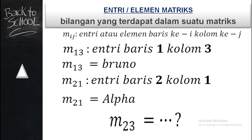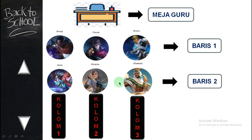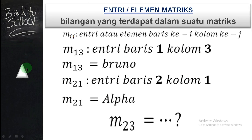Bagaimana kalau Anda ditanya M23? Jadi entry baris ke 2, kolom yang ke 3. Baris ke 2: Alfa, Silvana, Khalid. Kemudian kolom yang ke 3 kita lihat: kolom 1, 2, 3. Jika Anda menjawab Khalid, maka jawaban Anda benar. Jadi M23 adalah Khalid, atau angkanya tadi mewakili 6.